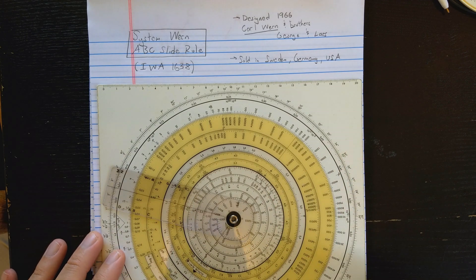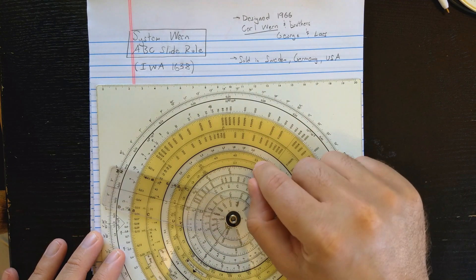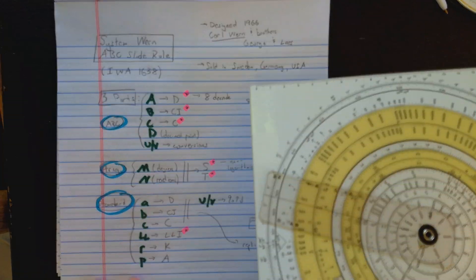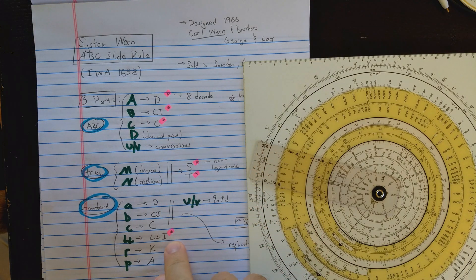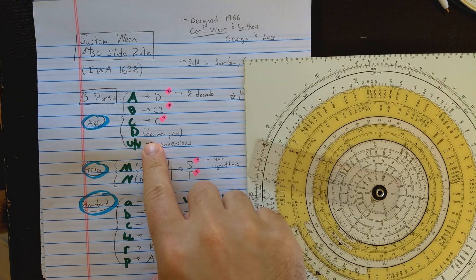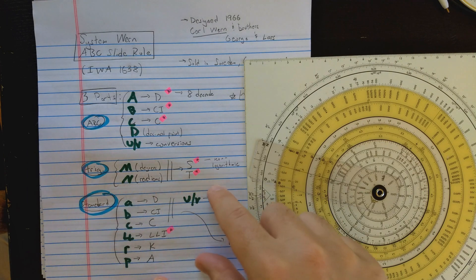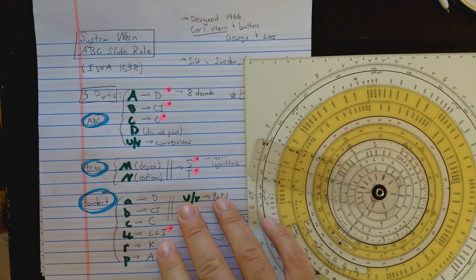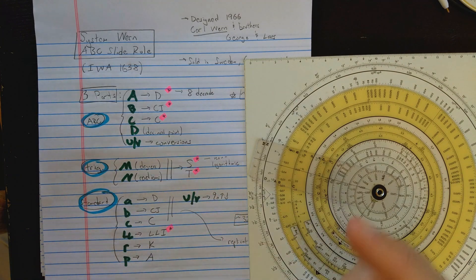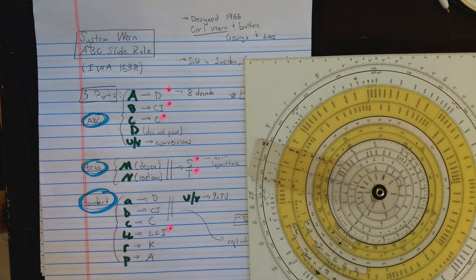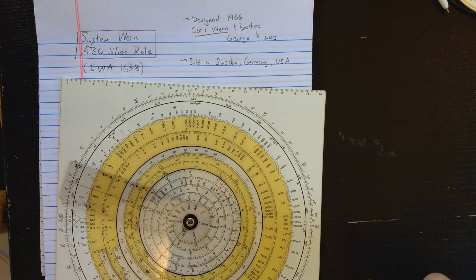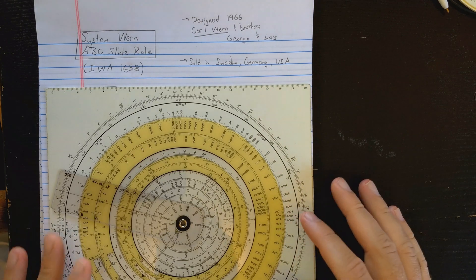I'm going to do a few more calculations. I showed you how to do the basic ABC calculations in the first video. I think of this slide rule as broken into three parts: the ABCD part, the trig part, and the standard slide rule part. If you're familiar with circular slide rules, I don't need to show you too much of the standard part, but I'm going to run through a few calculations and make some more comments. Then maybe we can conclude — would we have thought about this slide rule back in 1966 or the late 60s?